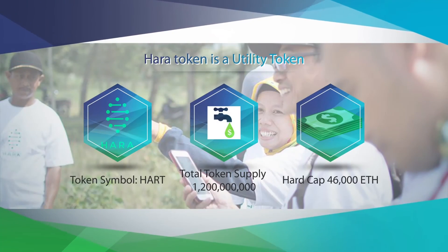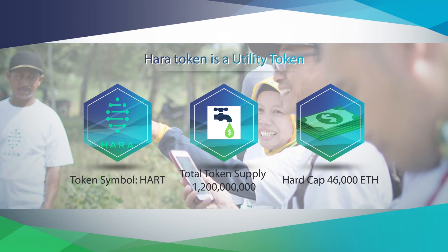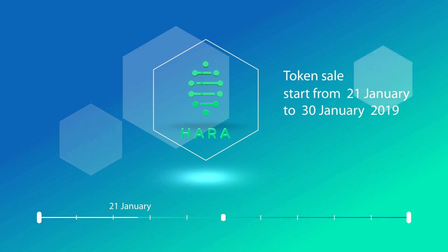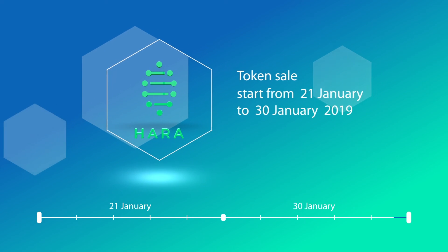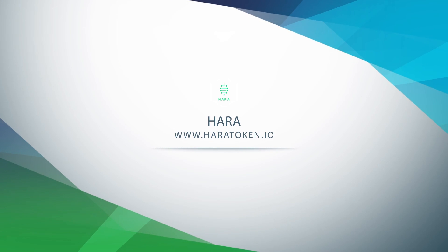HARA Token is a utility token. Token Name: HARA. Token Symbol: HART. Token Type: ERC20. Total Token Supply: 1,200,000,000. Tokens for Sale: 360,000,000. Hard Cap: 46,000 ETH. Token sales run from January 21 to January 30, 2019. For further information, please visit www.haratoken.io.